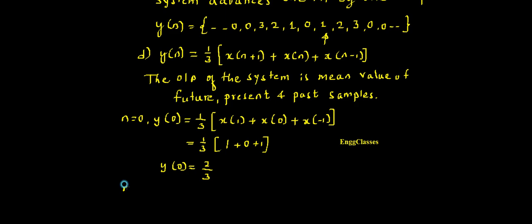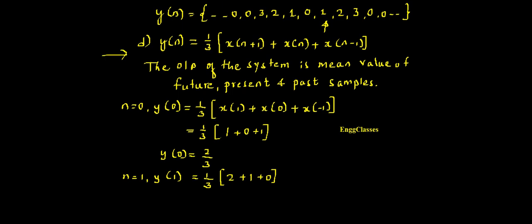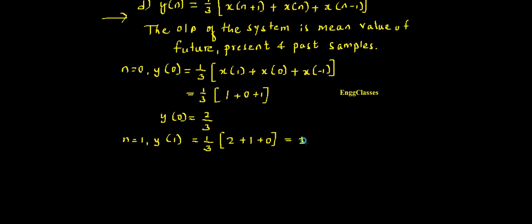For n = 1: y(1) = 1/3 * [x(2) + x(1) + x(0)] = 1/3 * (2 + 1 + 0) = 3/3 = 1. For n = 2: y(2) = 1/3 * [x(3) + x(2) + x(1)] = 1/3 * (3 + 2 + 1) = 6/3 = 2.